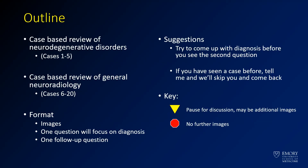For this first board exam, we're going to give you a case review of neurodegenerative disorders at the beginning — cases one through five will be neurodegenerative disorders. The subsequent 15 cases, cases six through twenty, are going to be general neuroradiology board review. We'll show you some images, give you time to think about a diagnosis, and then give you usually two questions per case — one focusing on the diagnosis and one follow-up question.